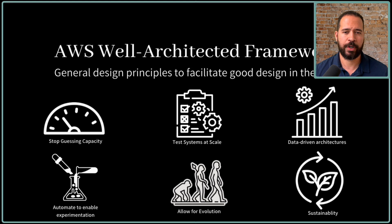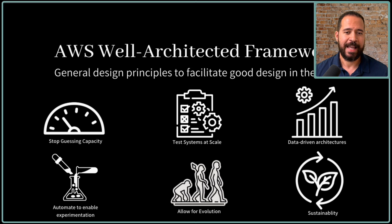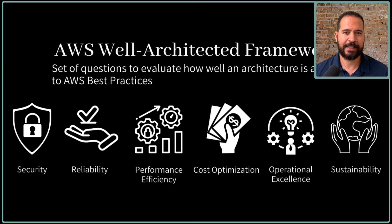The AWS Well-Architected Framework is essentially general design principles that facilitate what a good design looks like in the cloud. At a high level, the Well-Architected Review enables you to stop guessing about capacity, test your systems at scale, build data-driven architectures, employ automation, enable experimentation, allow for the evolution of the architecture, and ensure that your architecture is sustainable with the earth in mind. The framework is really a set of questions that allows you to evaluate how an architecture is aligned to AWS best practices, broken down into those six pillars.